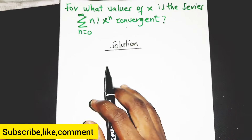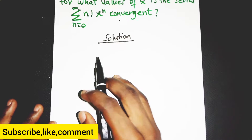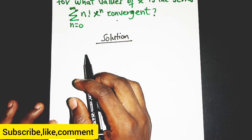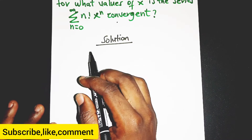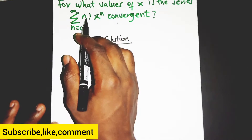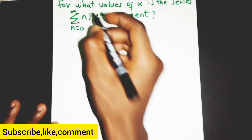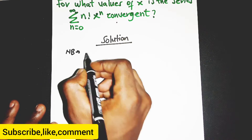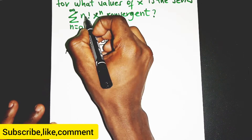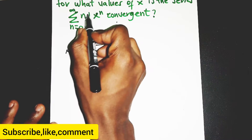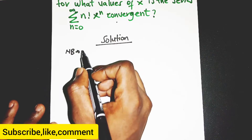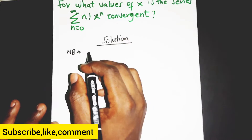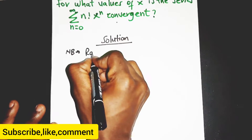Now, one thing about power series or series in general is that you have to know what kind of test to use. In this case we have a factorial, and one trick is that when you see a factorial in a series formula, the best test to use is the ratio test. So we are going to use the ratio test.